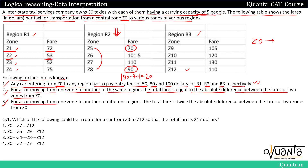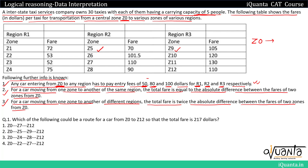The third rule: for a car moving from one zone to another in different regions, the total fare is twice the absolute difference between the fares of the two zones from Z0. For example, moving from Z5 in region R2 to Z9 in region R3: Z0 to Z5 is 70, Z0 to Z9 is 105, so fare from Z5 to Z9 is 2 × |105 - 70| = 2 × 35 = 70.